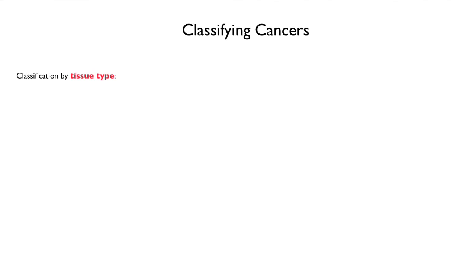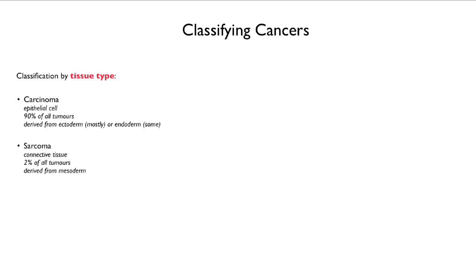There are lots of ways of classifying cancers. They can be classified by tissue type. For example, a carcinoma is derived from an epithelial cell and constitutes about 90% of all tumors. Sarcomas are derived from connective tissue and are only about 2% of all tumors — they're derived from mesoderm. Leukemia is derived from cells in our bone marrow, constituting about 8% of all tumors, and also derived from mesoderm.